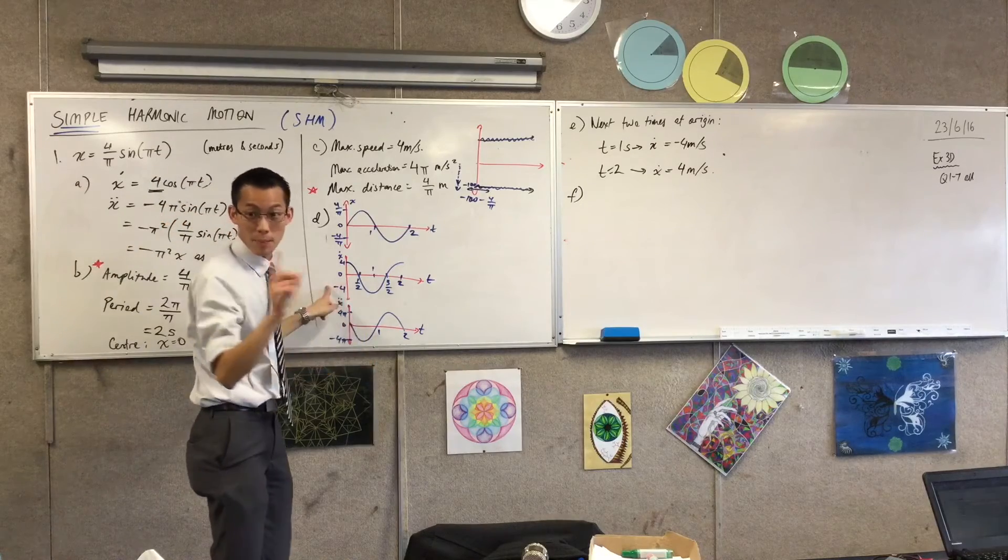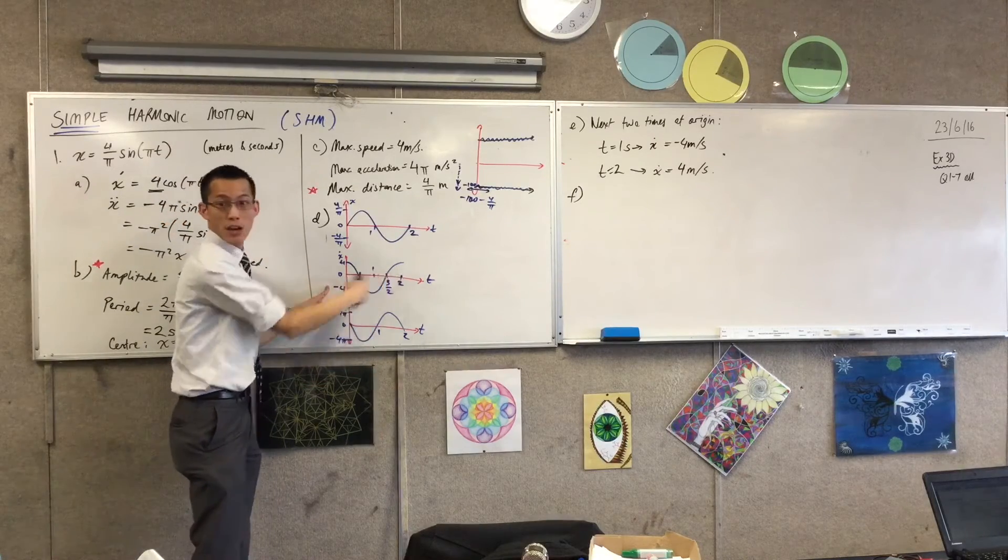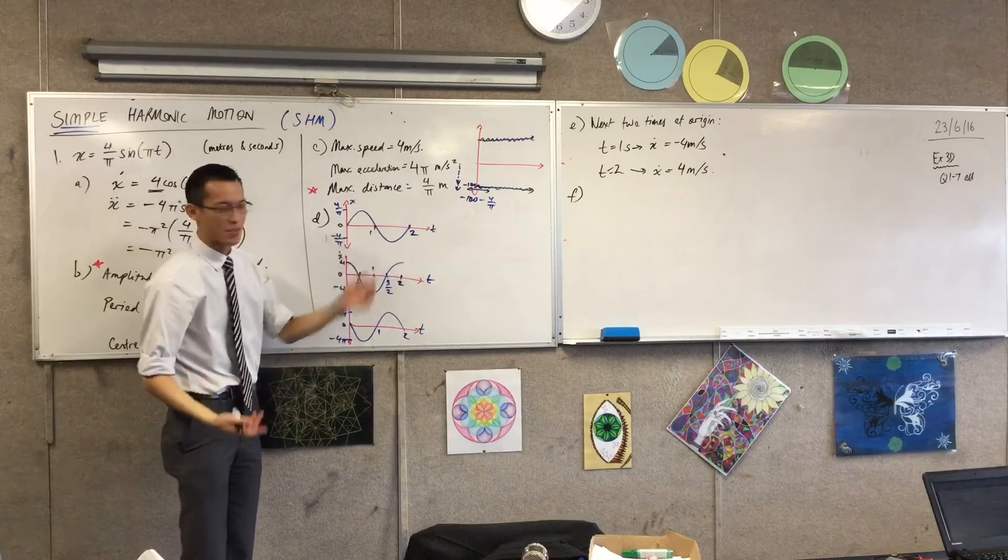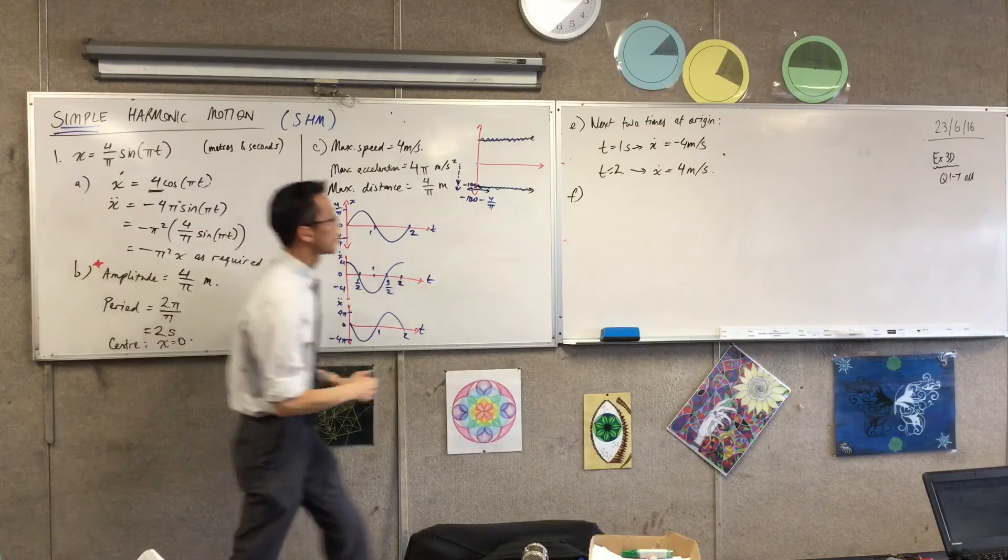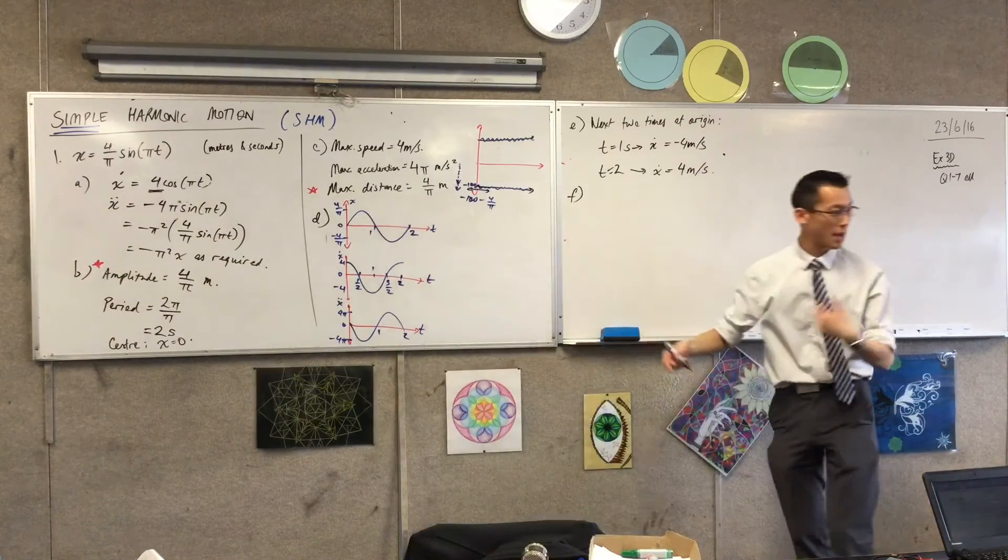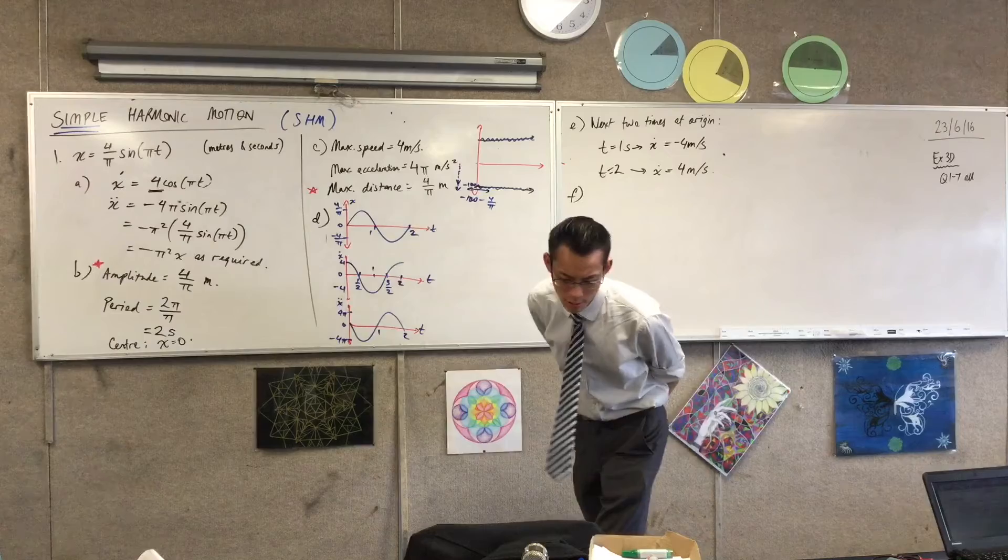Find the two times the particle is stationary. Where's that? Have a look. You can use the velocity graph. But I've got literally the points of where it's stationary and I've even labeled what they are. So I'm going to say, next two times when it's, sorry, is it next two times? First two times, actually.